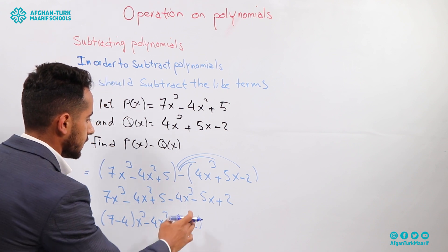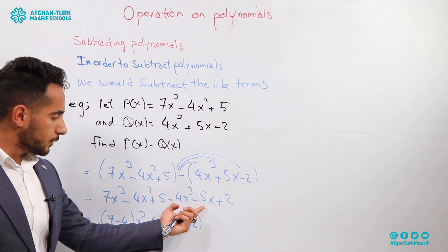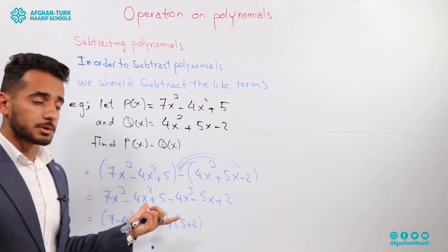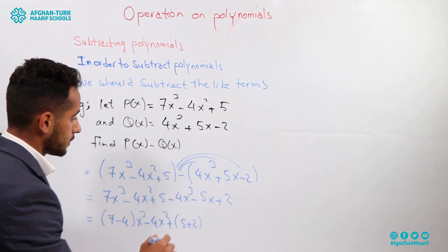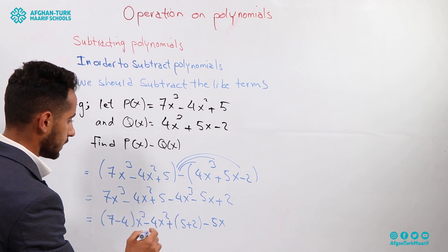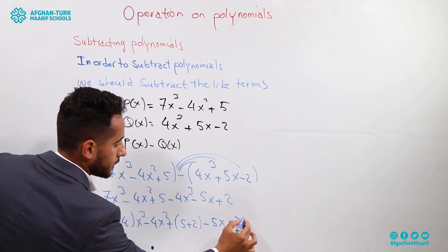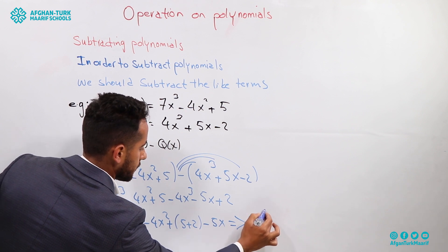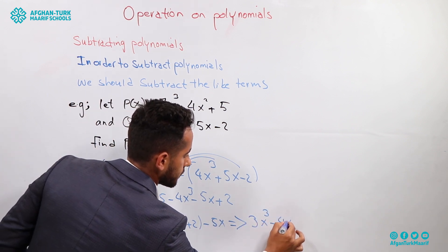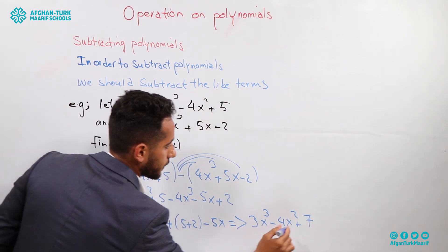For the minus 5x term, we check whether there is another first-degree term. No, there isn't, so we write minus 5x itself. The final answer is: 3x to the power of 3, minus 4x squared, plus 7, and minus 5x.